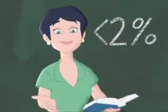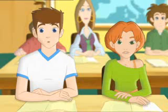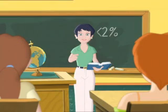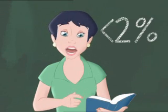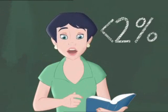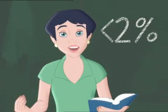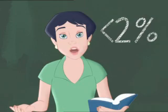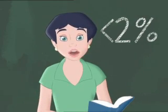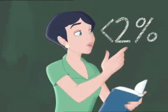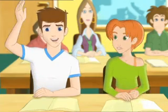Today we're going to talk about price stability. Price stability, as defined by the Governing Council of the European Central Bank, is the year-on-year increase in the harmonised index of consumer prices for the euro area of below 2%.